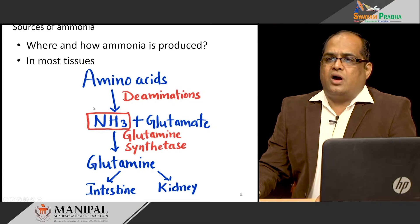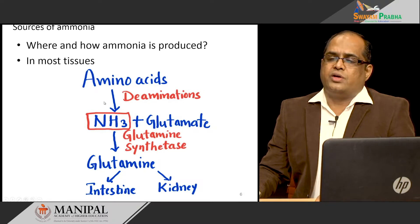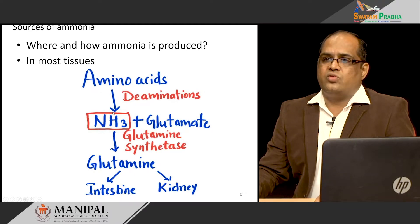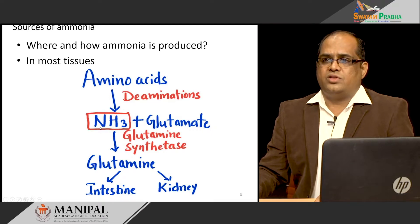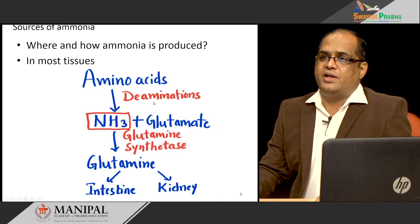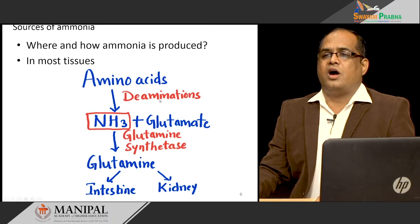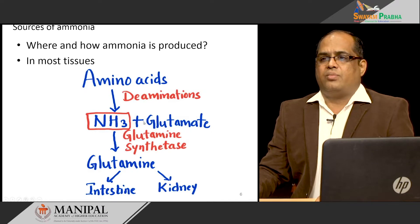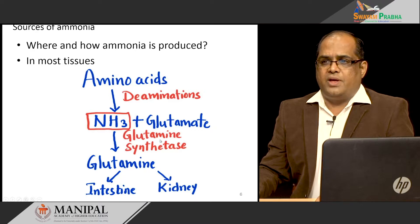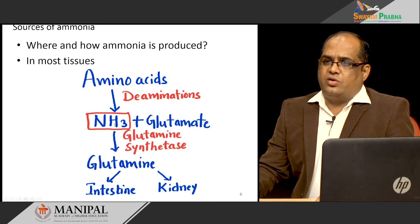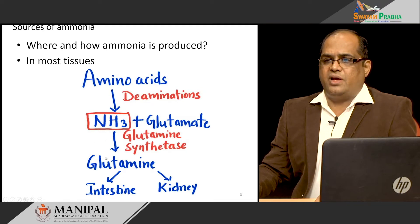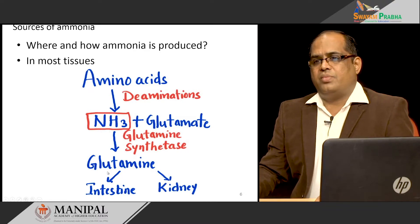Now, in most tissues including skeletal muscle, when amino acids are metabolized the first thing the body does is remove the amino group as ammonia — these reactions are called deamination. Most tissues release the free amide group as ammonia, which is then taken up by glutamate. Alpha-ketoglutarate can take up one ammonia and one amino group to form glutamate, and glutamate is converted into glutamine by glutamine synthetase in an ATP-requiring reaction.